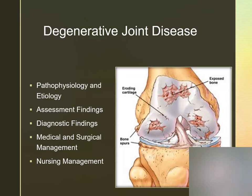Risk factors include increasing age, a previous joint injury, obesity, congenital or developmental factors, hereditary components, and decreased bone density. With primary DJD, there's no known cause. With secondary DJD, the underlying cause is going to be some type of injury, for example.